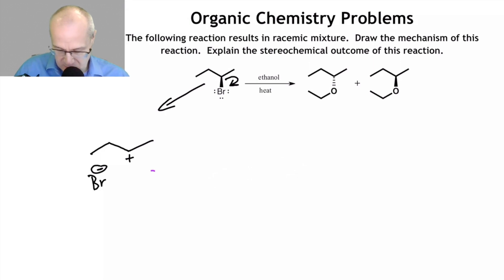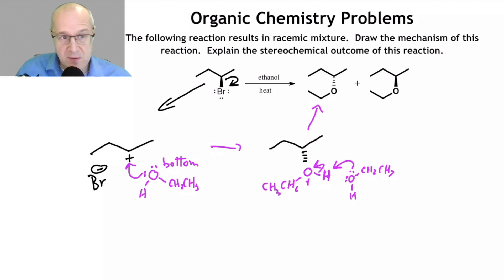All right. So now the OH, or sorry, the ethanol. Attacks there from the bottom, let's say. And let's go through the process here. And we'll use the solvent to take off the proton from the protonated ether. And that's going to give us this product right here. So that's the first product explained.